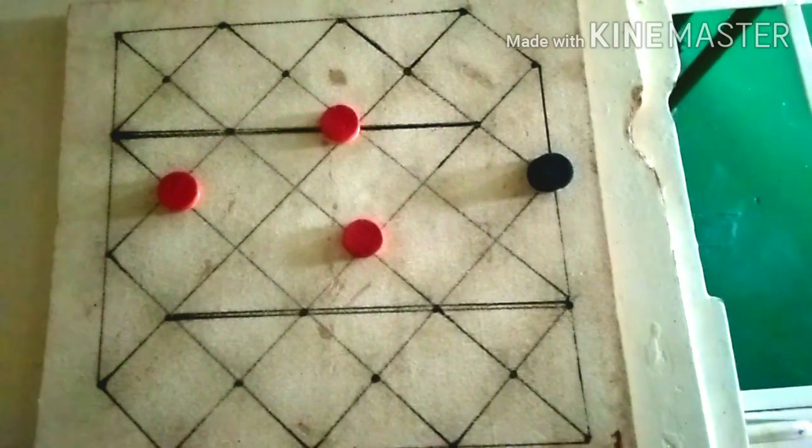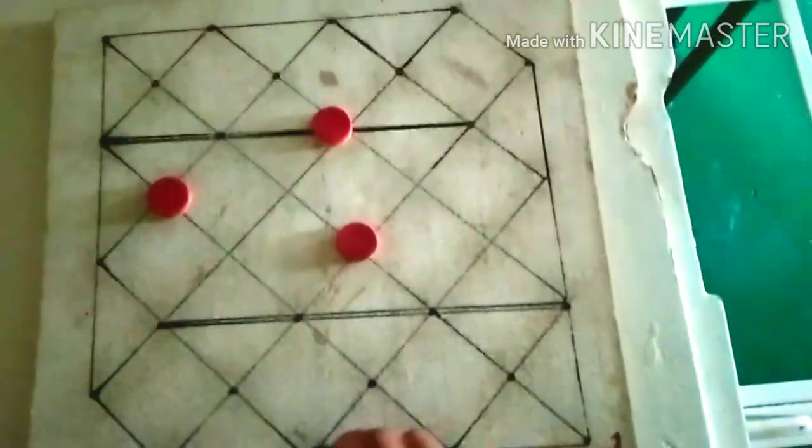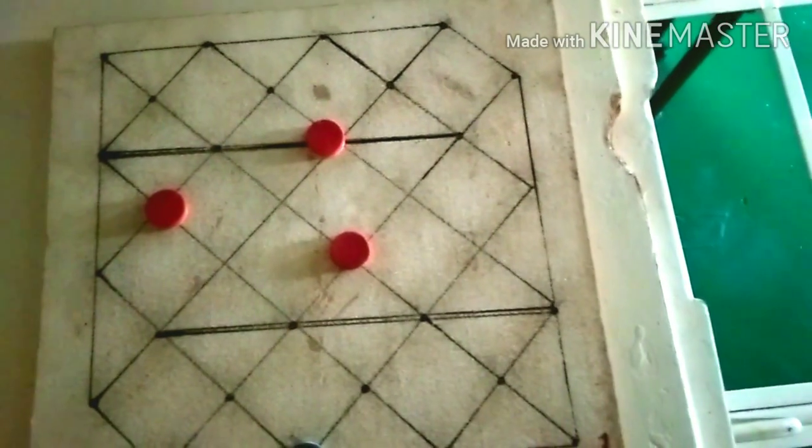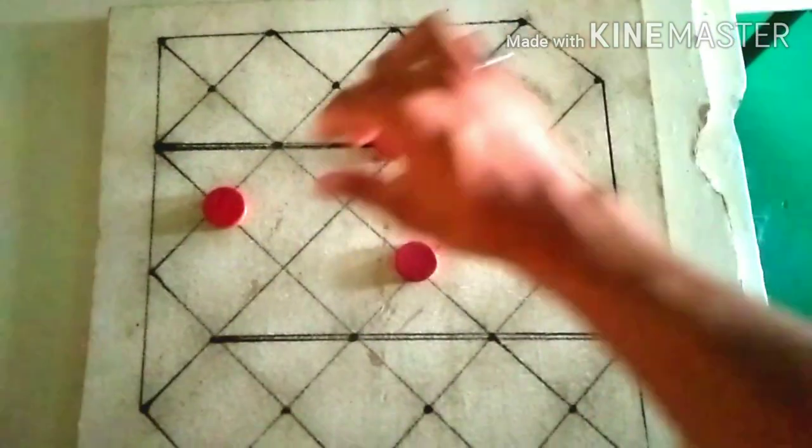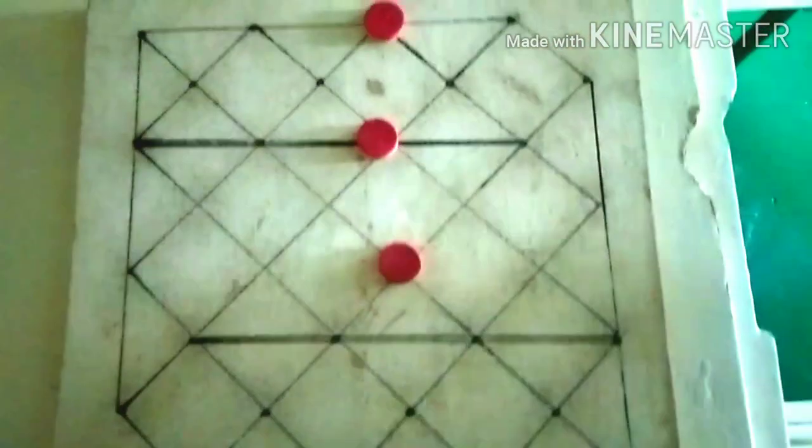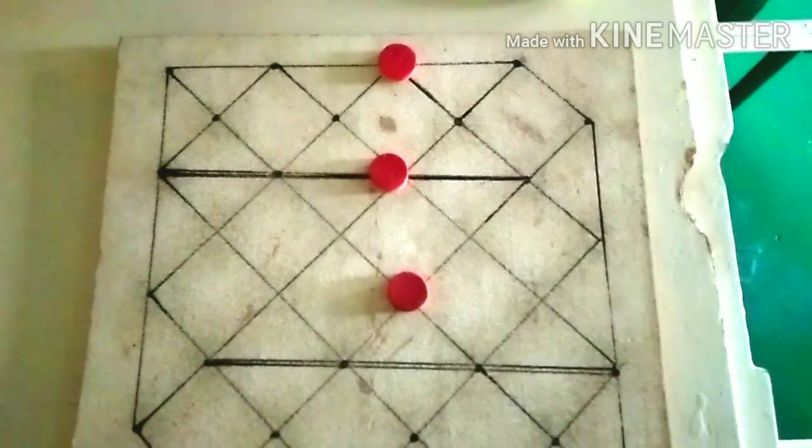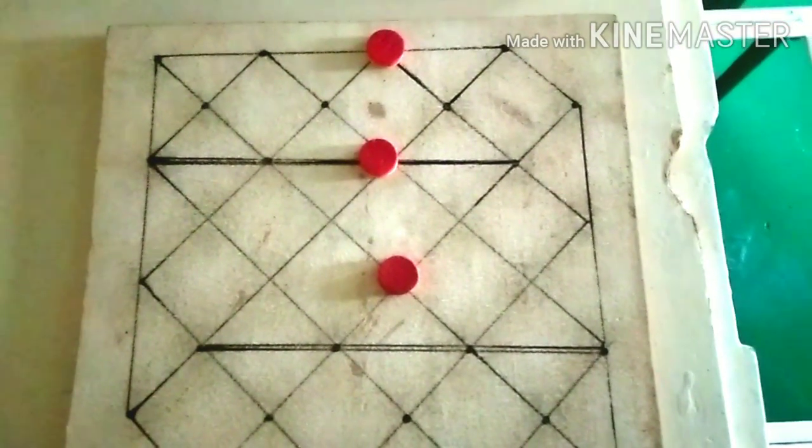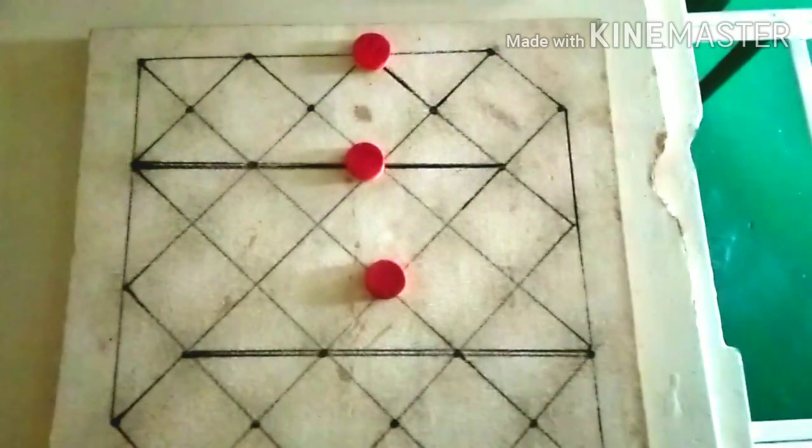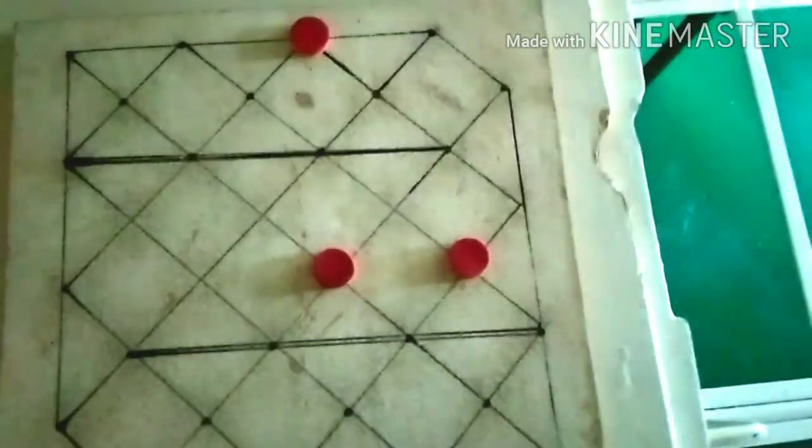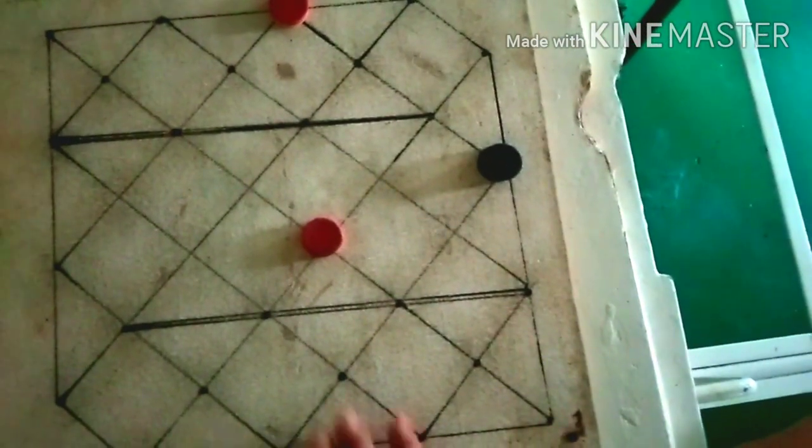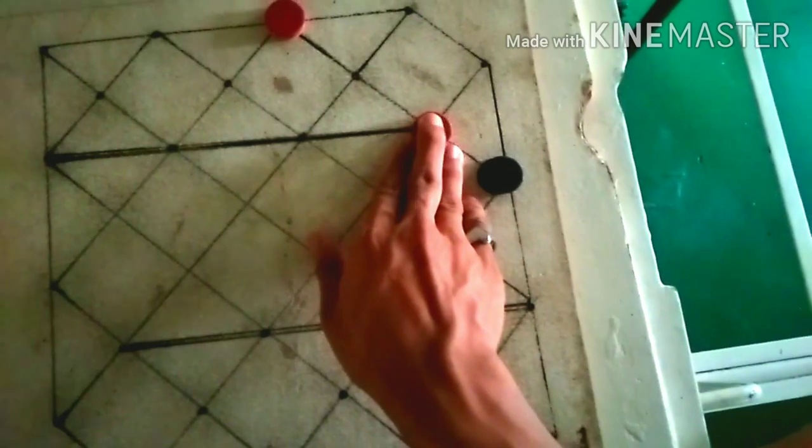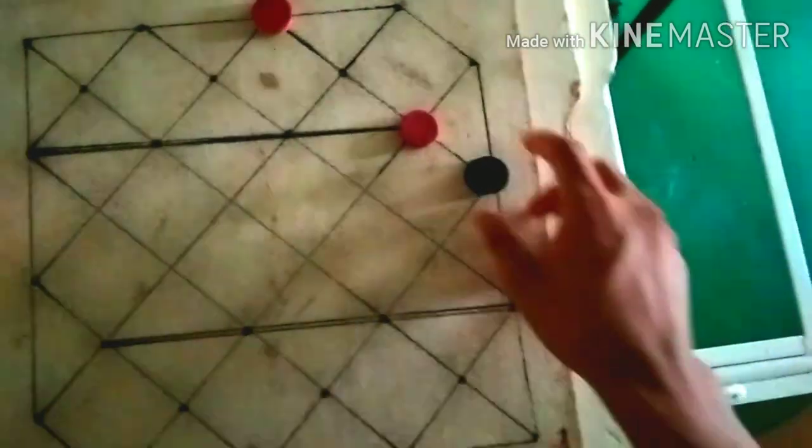Tapos babalik yung black dito. Next yung red moves dito. Talo na yung black. Pakain mo yung red. Pakain yung black. Tumira yung black red dito pakain. Talo yung isa.